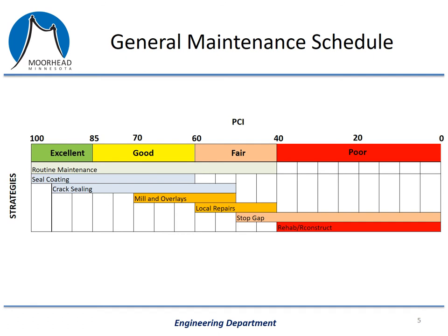Now I'm going to explain when we typically like to do these types of projects and how it relates to the PCI. Over time and from use, the PCI of any given street will decrease. From time to time, we will perform maintenance on that street. The type of maintenance depends on several factors, but it's largely influenced by the PCI. The chart on this slide shows how our maintenance strategies change depending on the PCI value. The PCI values go from 100 to 0, so from best to worst. As you read from top to bottom, you can see our different strategies and how they change as the PCI gets lower.